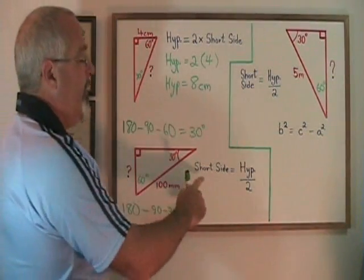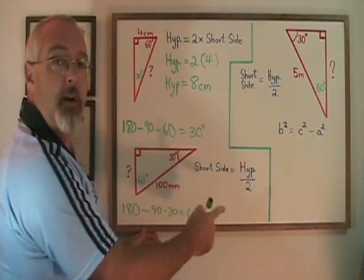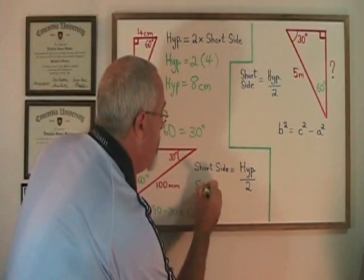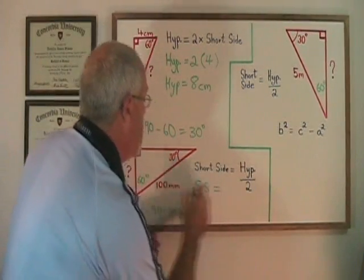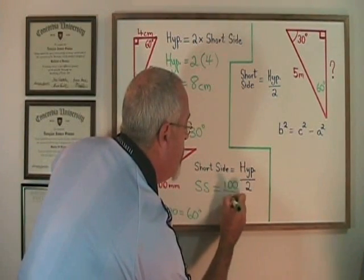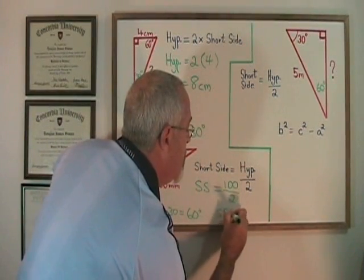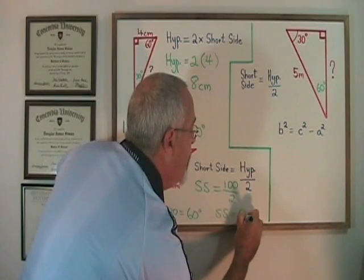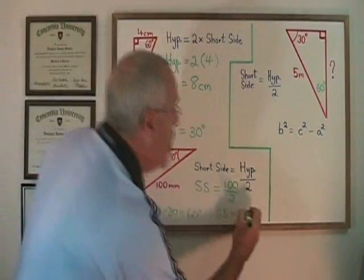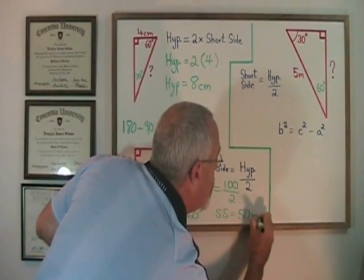The same property can be expressed in this way: the short side must be equal to the hypotenuse divided by 2. The short side must be equal to, in this case, 100 divided by 2. Therefore, the short side in this case is equal to 50. Because the unit of measure in this triangle is millimeters, the short side's length will be 50 millimeters.